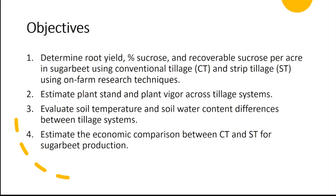The four main research objectives were: one, determine root yield, percent sucrose, and recoverable sucrose in sugar beet with conventional tillage and strip tillage using on-farm techniques; two, estimate plant stand and plant vigor across the two systems; three, examine soil temperature and soil water content between the two systems; and four, estimate the economic comparison between the two systems. The main point is if we can maintain sugar beet production but save field passes with strip tillage, that's where the savings come in.